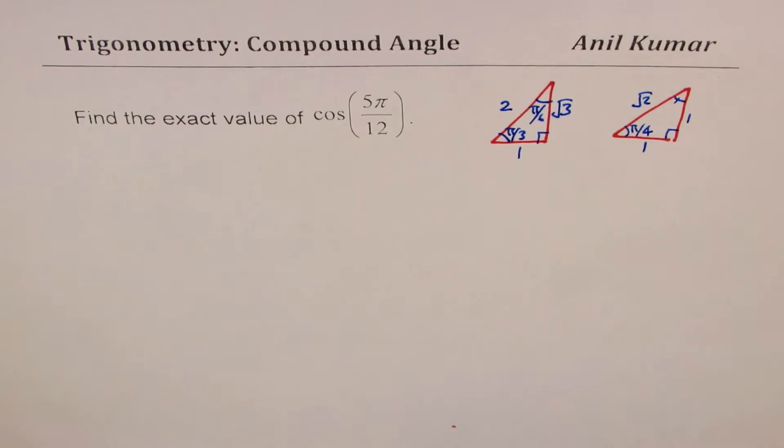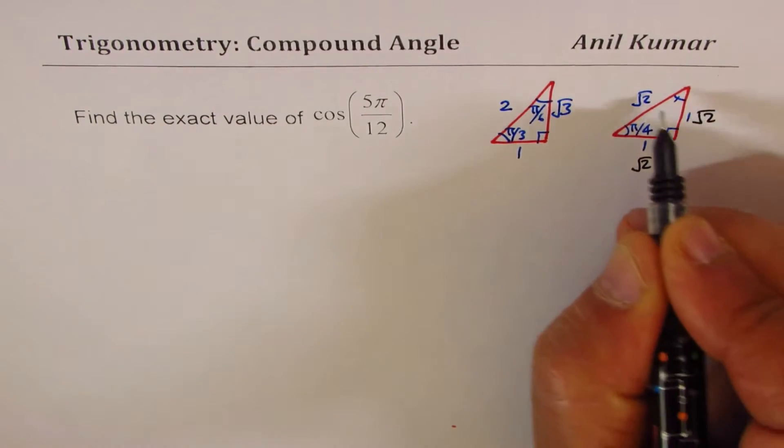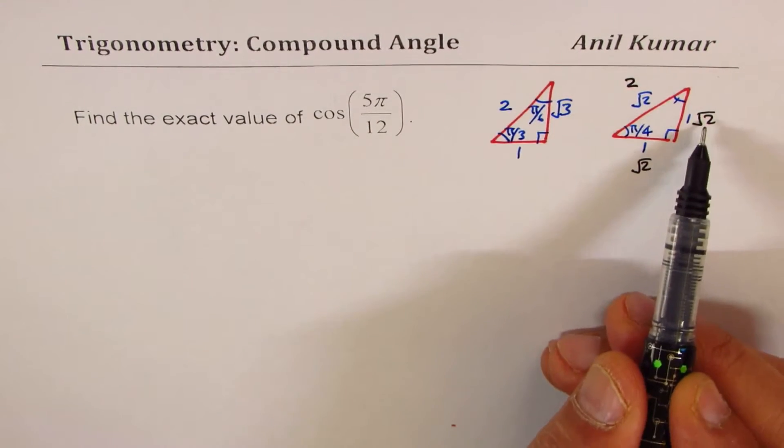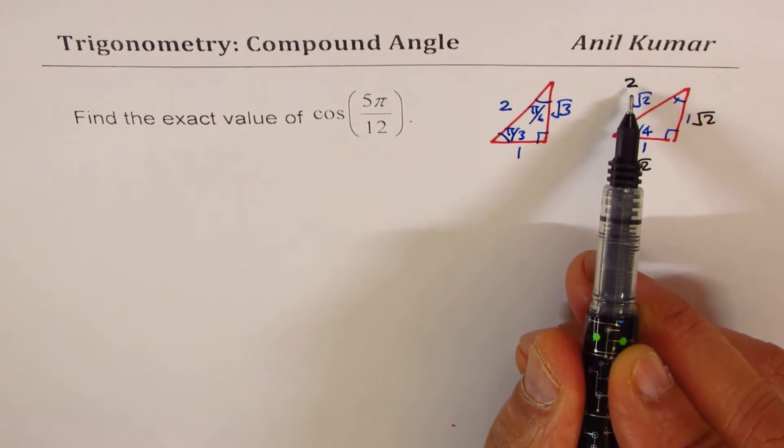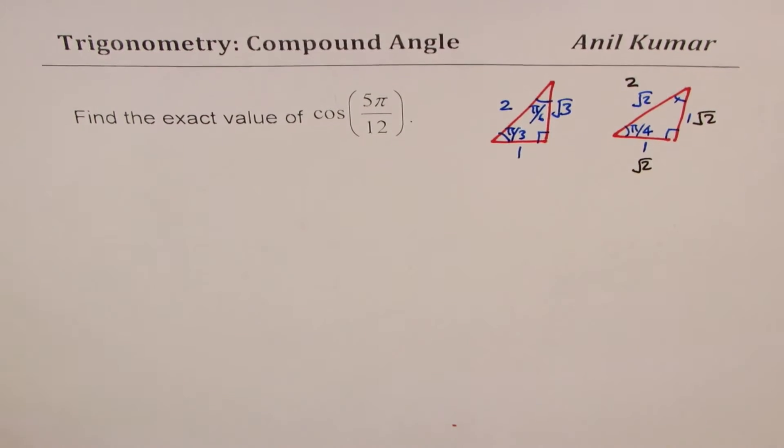Now some of you can also take the sides as multiplied by √2, especially when we are working with cosine. We prefer to use these values so that we avoid the denominator being an irrational number. Perfect.